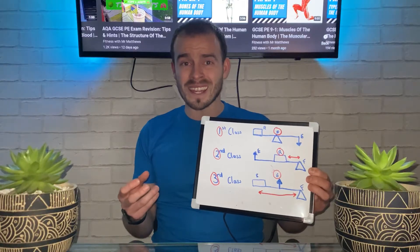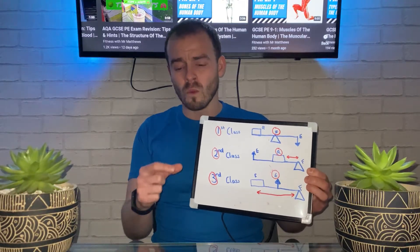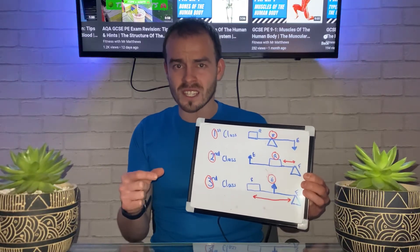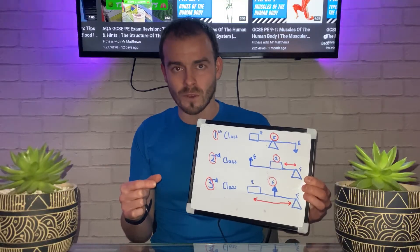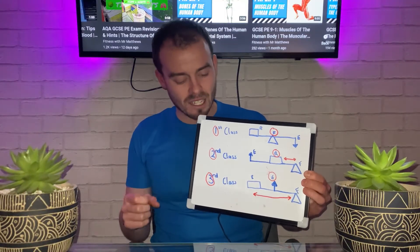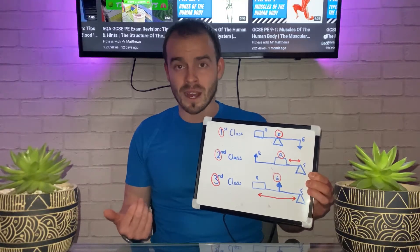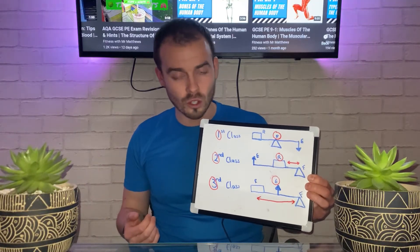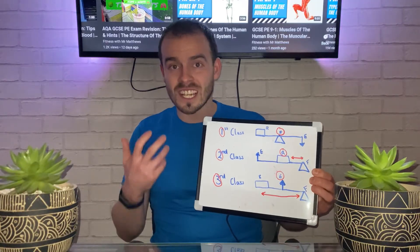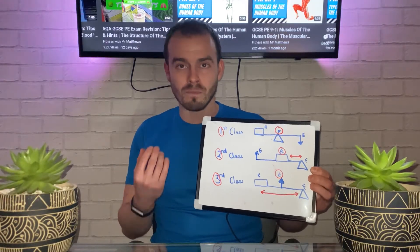The fulcrum is the ball of the foot where we see the crease in a person's trainer, as that acts as the joint. The effort is the muscle in the lower leg located at the back, known as the gastrocnemius, and the resistance is the person's body weight.